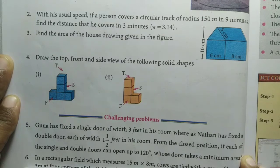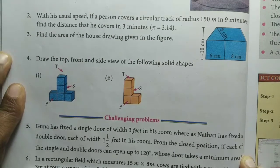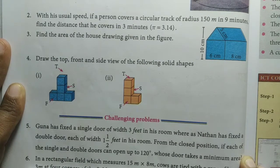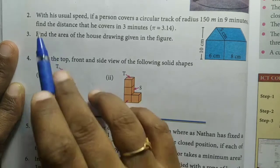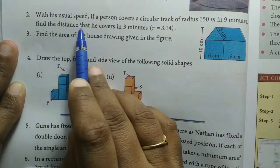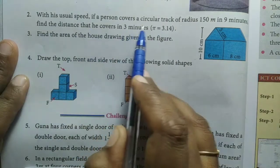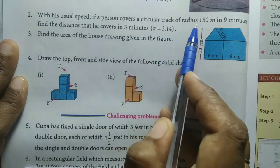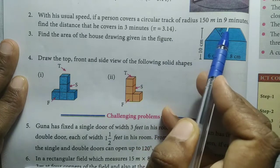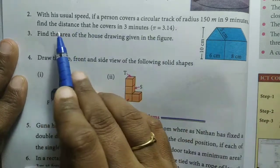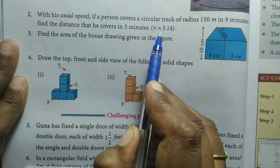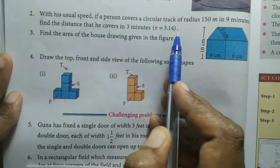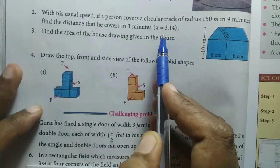Hello friends, welcome to VM Literacy Channel. In this video, 8th standard Maths full book edition, Exercise 2.4, second question. With his usual speed, if a person covers a circular track of radius 150 meters in 9 minutes, find the distance that he covers in 3 minutes. Here π = 3.14.